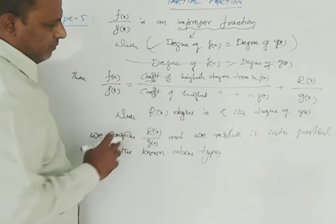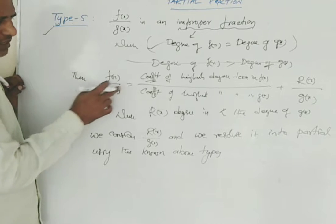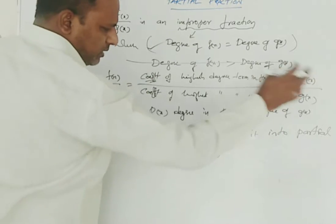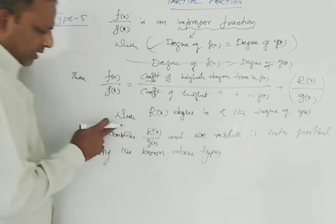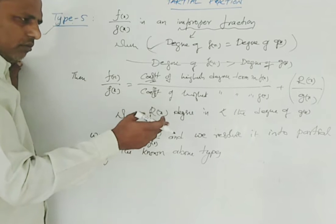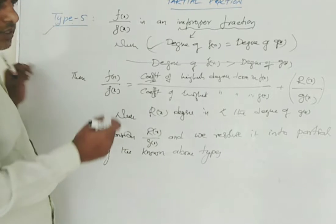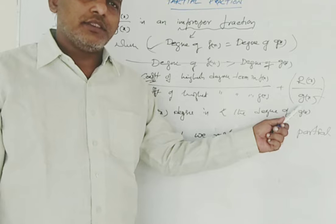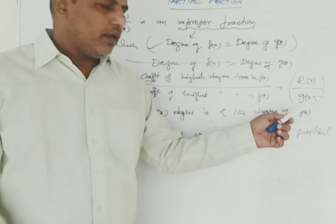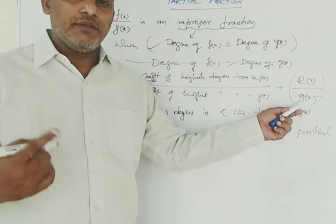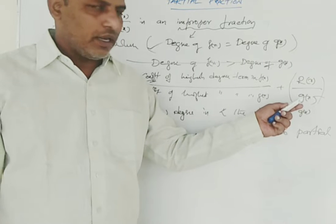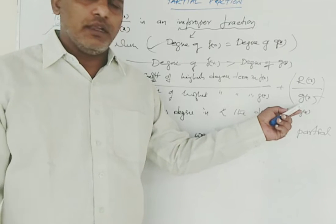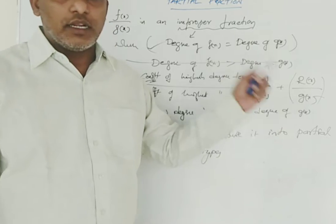When the degree of f of x is equal to the degree of g of x, then f of x by g of x can be written as the coefficient of the highest degree term in f of x divided by the coefficient of the highest degree term in g of x, plus r of x by g of x. This r of x by g of x can be further resolved into partial fractions using the null types — types 1, 2, 3, and 4 — depending on g of x. If g of x contains non-repeated linear factors, it is Type 1; repeated linear factors, Type 2; quadratic expressions as factors, Type 3; and repeated irreducible quadratic expressions, Type 4.